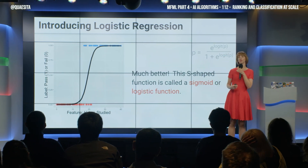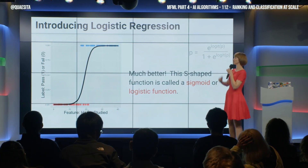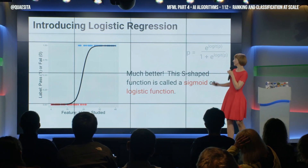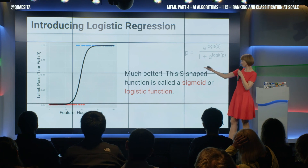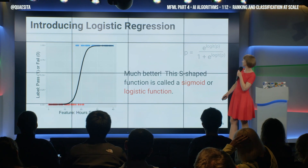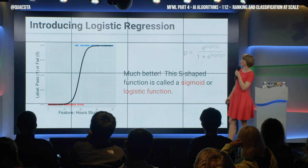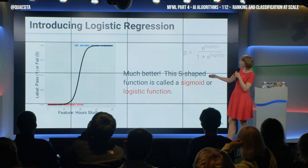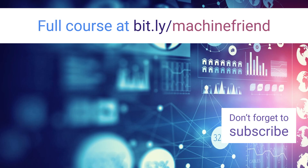So you get to peg your output where you want to, and you get diminishing returns from your sigmoid functions.